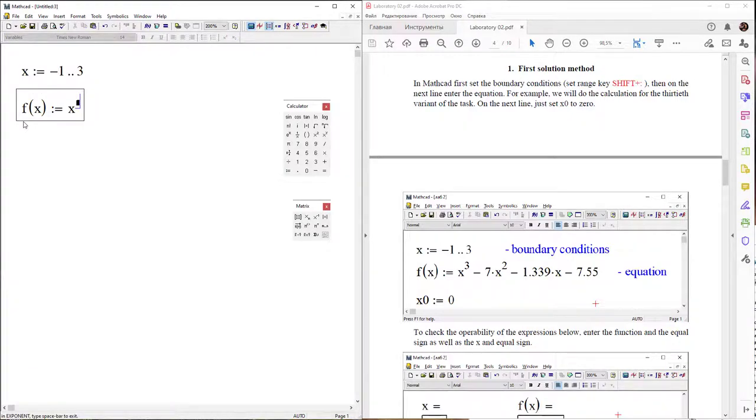Type the new equation: from keyboard shift 6 to make colon, spacebar minus 7, from keyboard calculator multiplication sign x, shift 6, spacebar minus 1.339, multiply from keyboard x minus from keyboard 7.55, and x equals 0, colon 0.